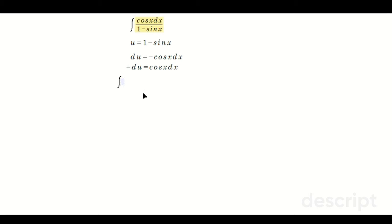Okay, plug in and replace. Cosine x dx is negative du, and then the bottom 1 minus sine x is u. So then use the ln rule. So you're going to have negative ln of the absolute value of u plus C.